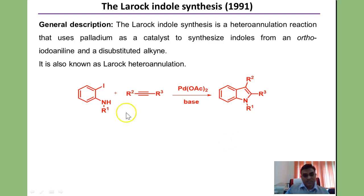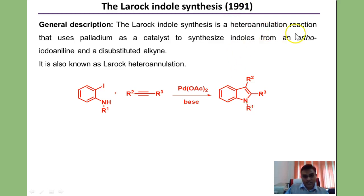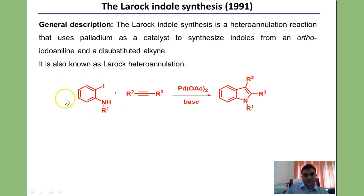The last methodology of this lecture is the Larock indole synthesis, a modern method for the synthesis of indole. With the advent of transition metal catalysis in organic synthesis, heterocyclic chemistry has been completely revolutionized. Larock indole synthesis, reported in 1991, is called a heteroannulation reaction. We start with ortho-iodoaniline, which when treated with an alkyne in the presence of a palladium salt and base gives formation of indole. This reaction is flexible because one can vary the substituents as well as start with a substituted benzene ring.